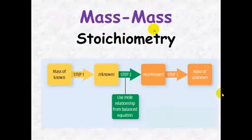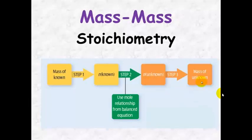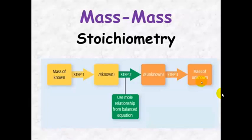Mass to mass stoichiometry: if you're given the mass of the known, you can work out the number of moles of the known. You can then use that mole ratio to work out the number of moles of the unknown, and then work out the mass of the unknown. I'm going to take you through a couple of examples step by step.